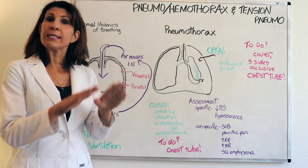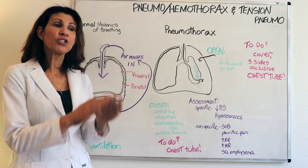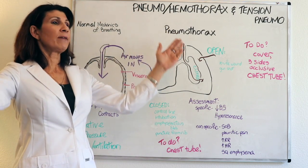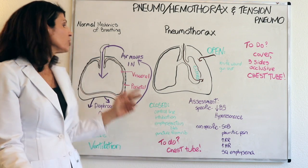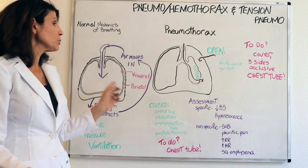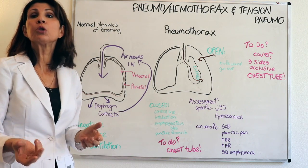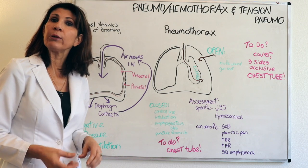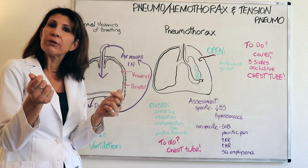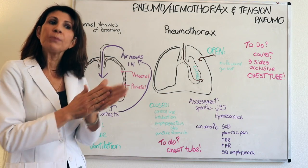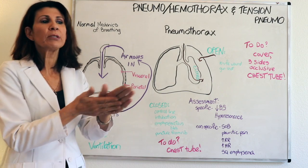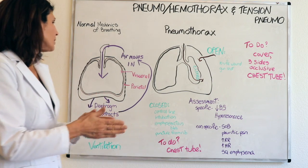Normally, there is a pleura that attaches directly to the lung and folds over, and the other pleura attaches directly to the chest wall. There is a space between those two pleura called the pleural space — there are no real spaces in the body, only potential spaces. Normally, there is just a little serous fluid that helps keep those two pleura from sticking to each other; they're just able to slide across each other.